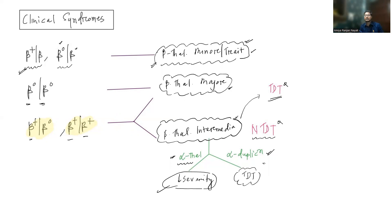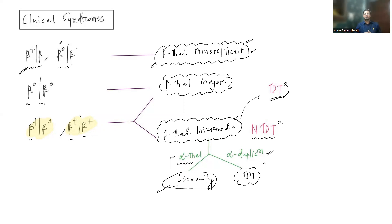Conversely, if there is alpha globin gene duplication — excessive alpha globin production — then beta thalassemia intermediate can behave like major, with more excessive alpha accumulation, more ineffective erythropoiesis, and transfusion-dependent behavior. This is a beautiful concept understandable only through knowledge of the pathophysiology.